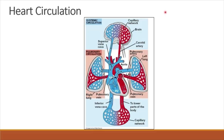Heart circulation is divided into two: pulmonary circulation and systemic circulation. Pulmonary circulation is the movement of blood between the heart and both lungs, right and left lung, while systemic circulation is the movement of blood between the heart and all parts of the body except the lungs.